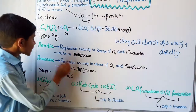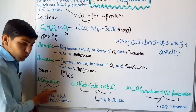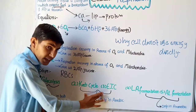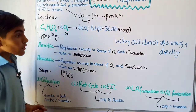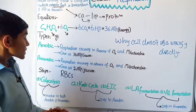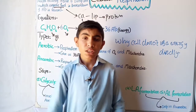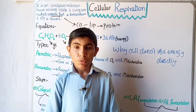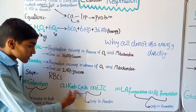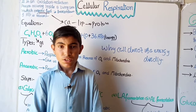In aerobic respiration 36 ATP is produced, and glycolysis produces 2 ATP, so the remaining 34 ATP is produced in the Krebs cycle and the electron transport chain. I hope you have learned about cellular respiration — its equation, types, steps, and energy production. This lecture should be helpful to you. If you have any doubts, mention them in the comments. In the next lecture we will talk about glycolysis, the Krebs cycle, and all steps in detail. See you next time.